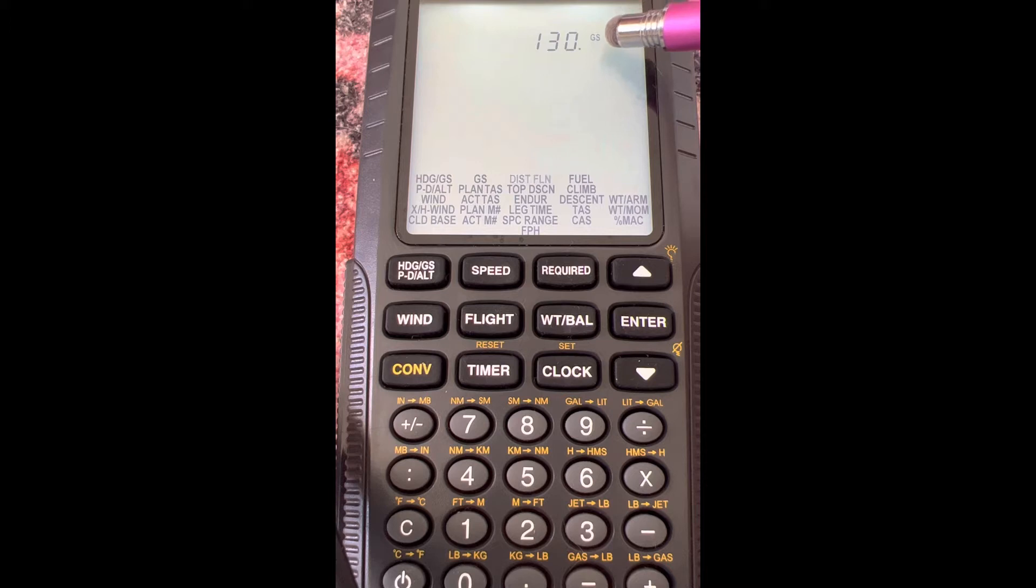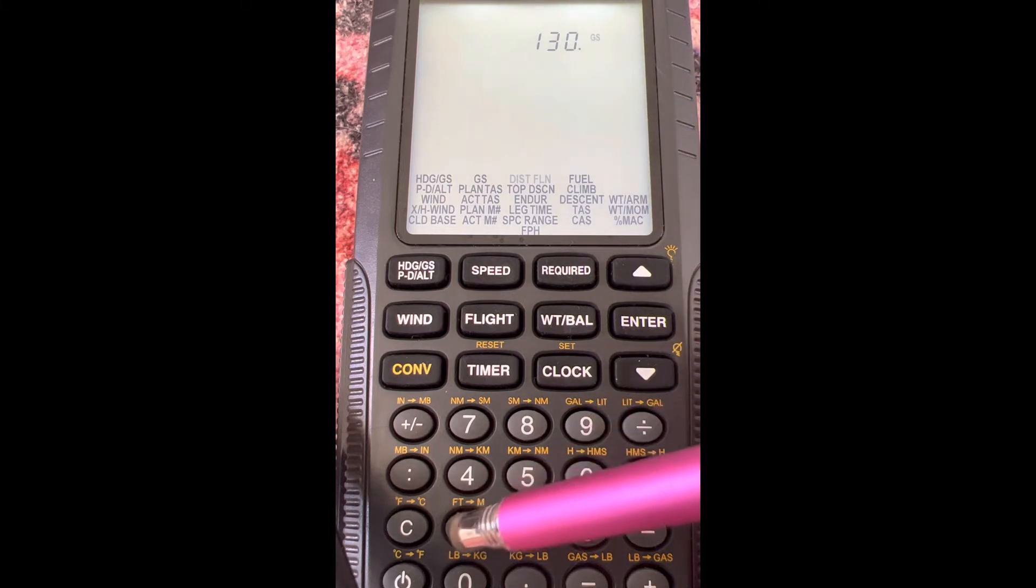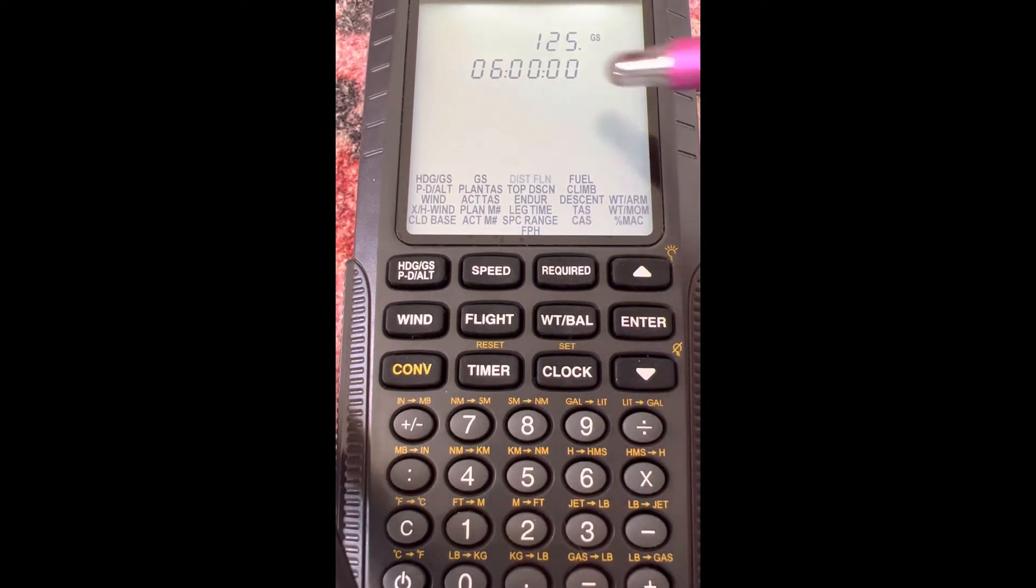Now this one we're going to need ground speed and time, and it'll give us distance. So let's say our ground speed is 125, so we'll enter 125, we'll press enter, and then for time let's say it's six minutes.